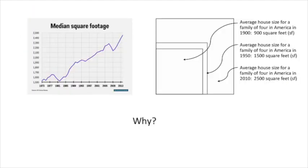In 1900, the average size of the American house for a family of four was 900 square feet. It doesn't seem very big, does it? The average dorm room in an American college is about 130 square feet, so we're talking about maybe seven dorm rooms total making up a house for a family of four. You can see in this chart that there's been a precipitous rise in the amount of square footage for an average house for a family of four in America, with a short drop when the big banks caused a financial crisis. In the year 2010, the average size of a house for a family of four in America was 2,500 square feet — two and a half times the size it had been just a century earlier. It's a massive change in the way we live.